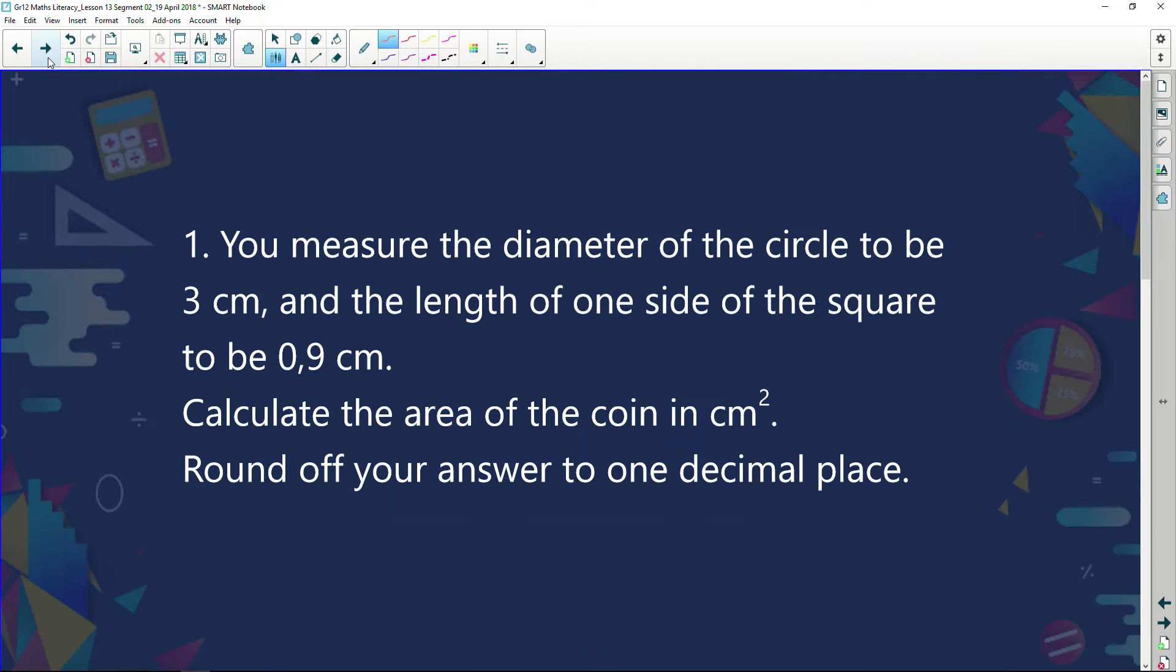Now, what's our question say? Our question says, you measure the diameter of the circle to be three centimeters, and the length of one side of the square to be 0.9 centimeters. Calculate the area of the coin, in other words, the bit that's left, round your answer to one decimal place.